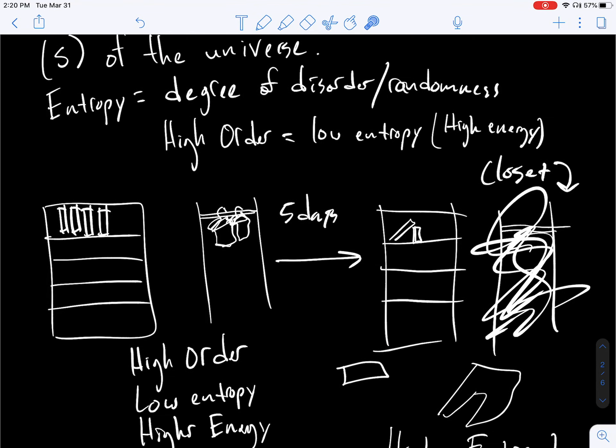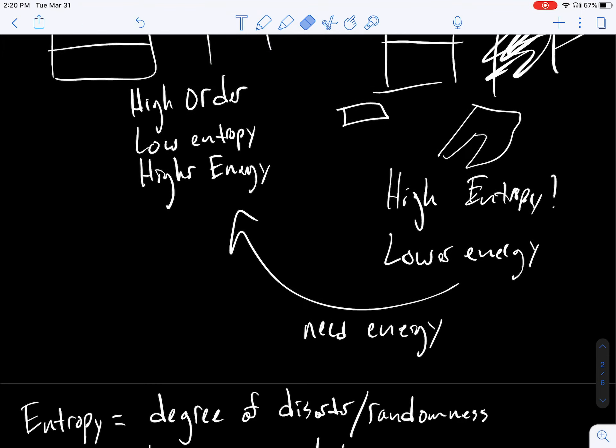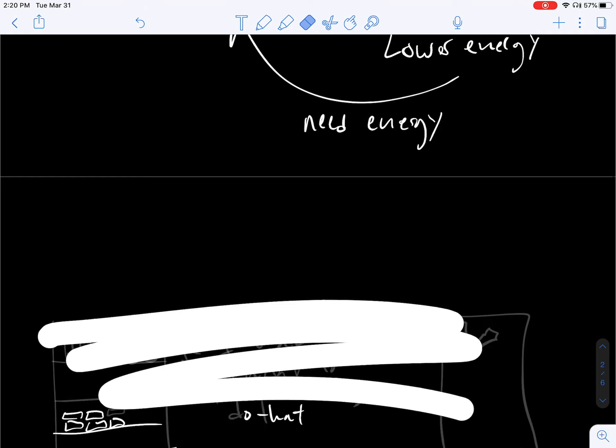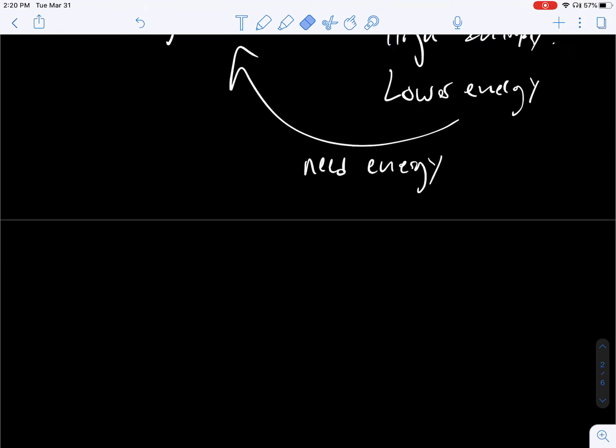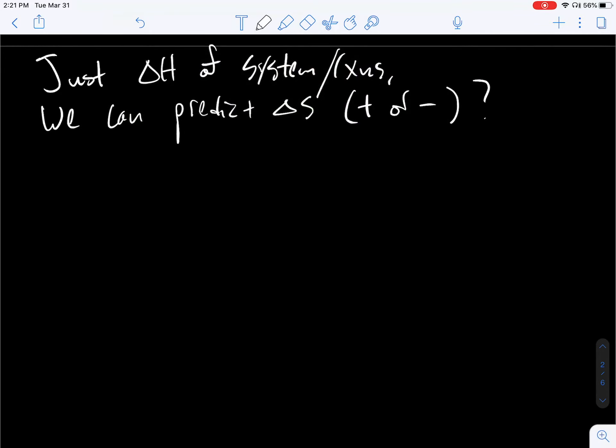So let's look at some actual chemical processes. That's entropy, and we're going to connect this back to spontaneous processes in a little bit. But let's consider entropy again. Just like delta H of systems reactions, we can predict delta S. So change in entropy, positive or negative symbol. So let's think about that for some of the processes the book puts out.